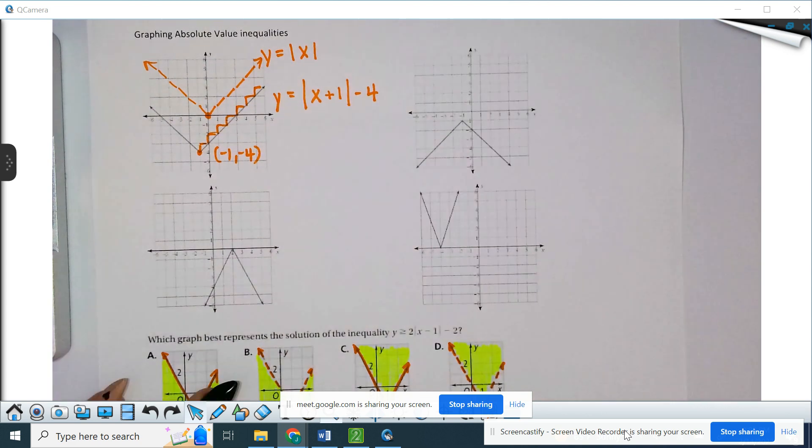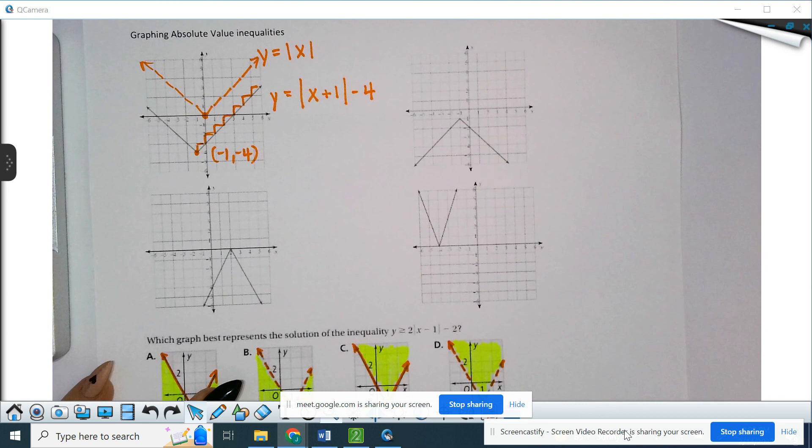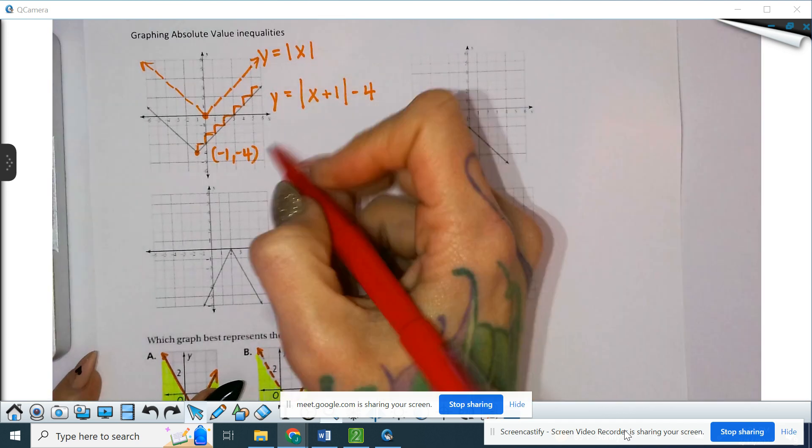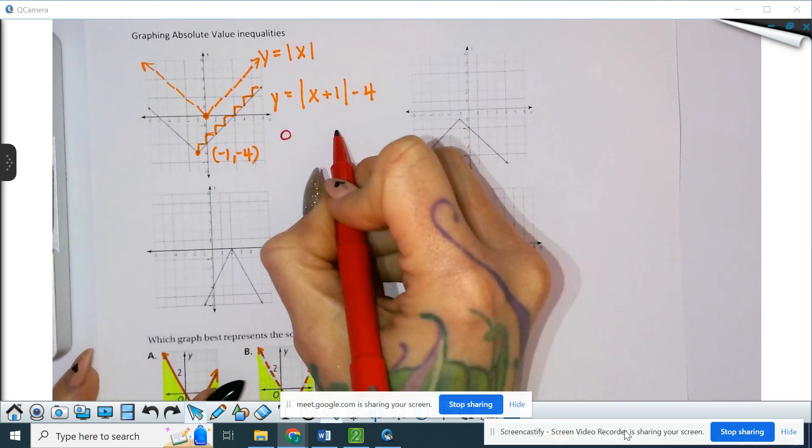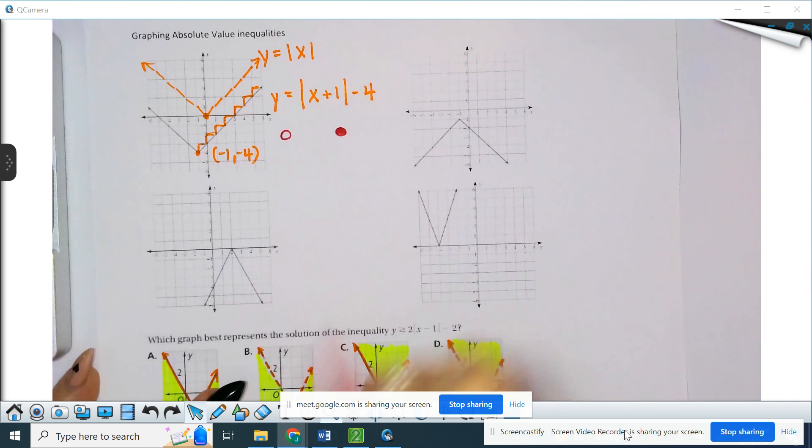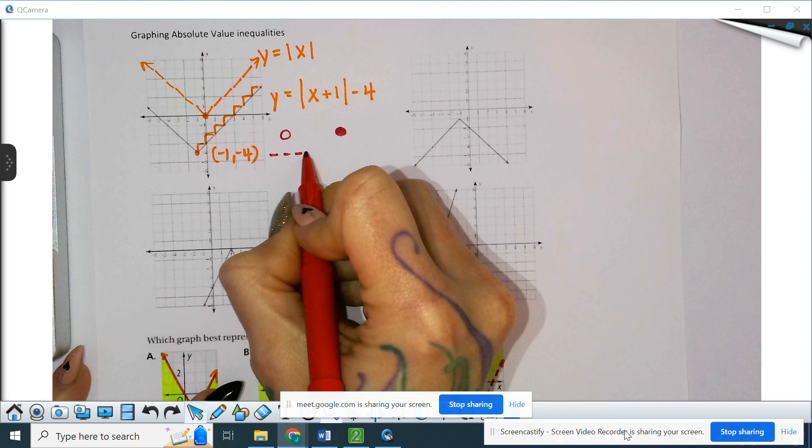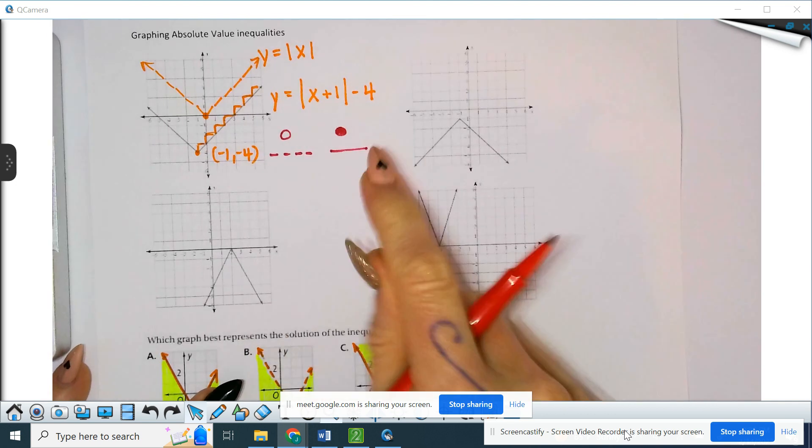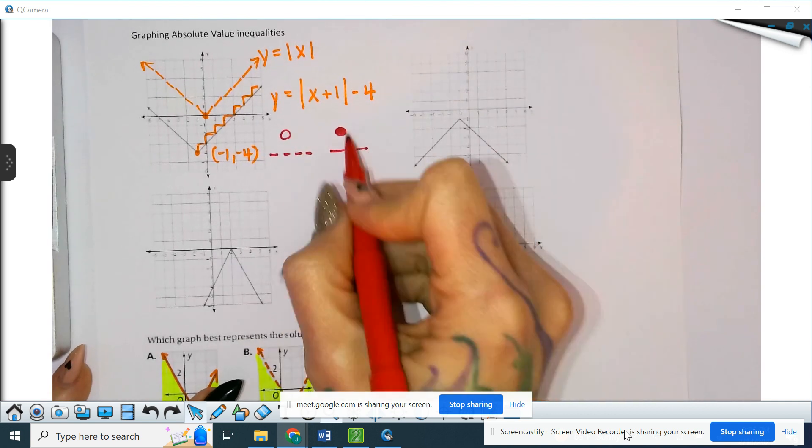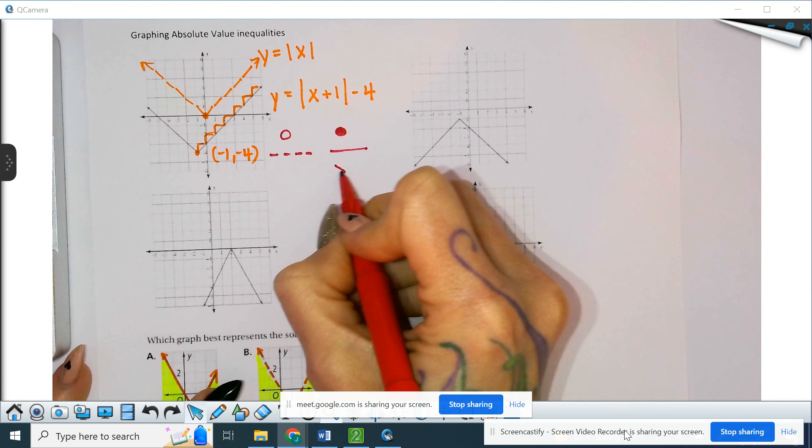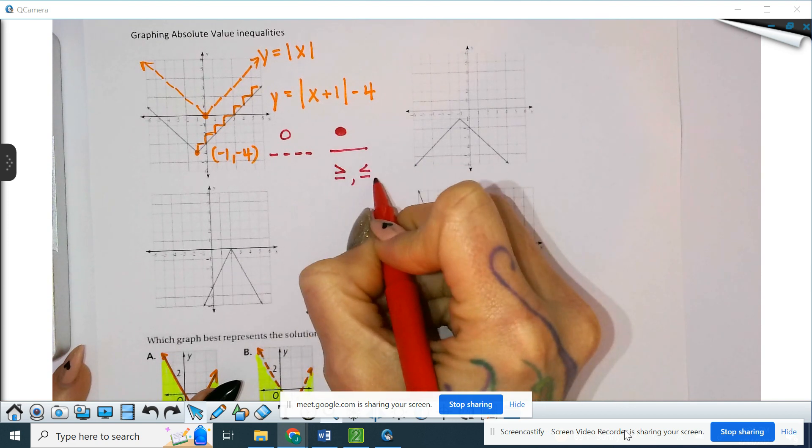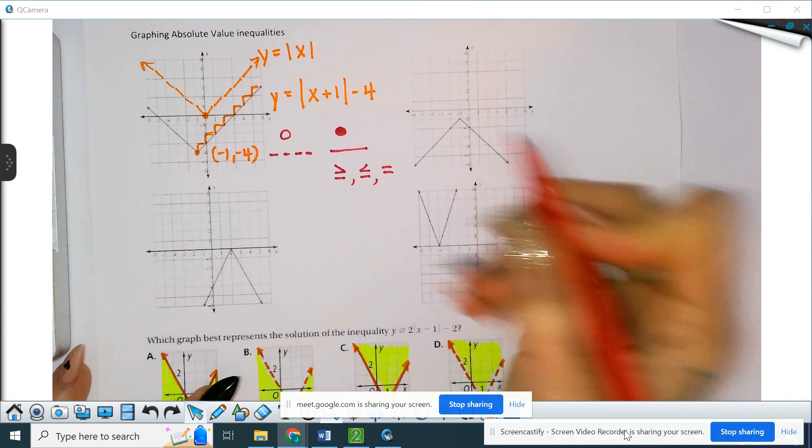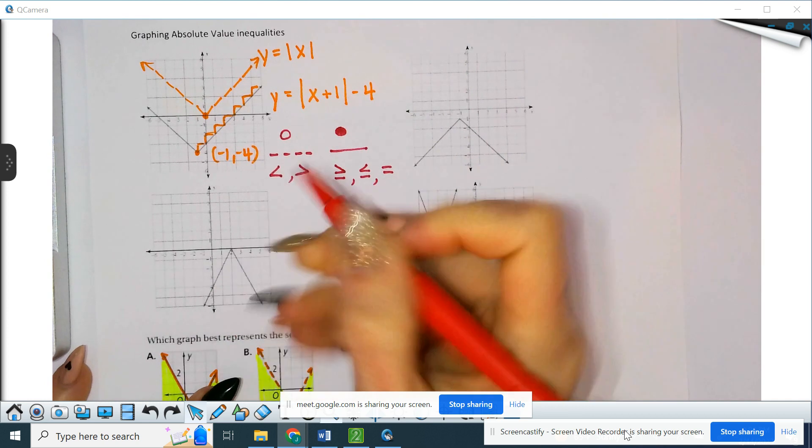I just had a minor heart attack. So, open circle versus closed circle was the conversation for single variable. Now, we're going to compare dashed line versus solid line. Same idea. Your solid is going to be that greater than or equal to, less than or equal to, and equal to's, whereas less than and greater than will be your dashed line.